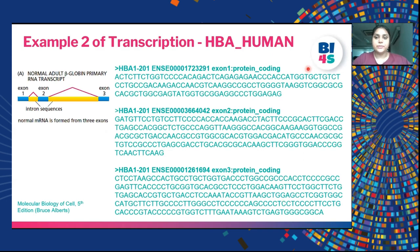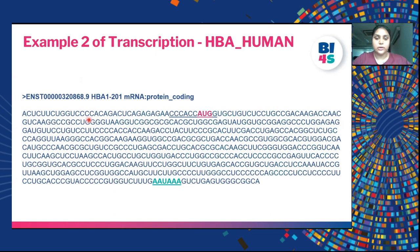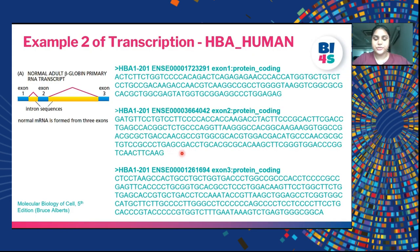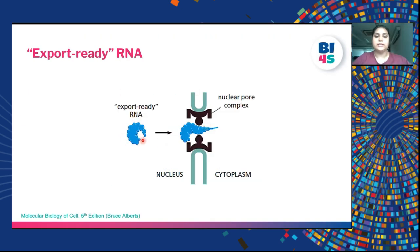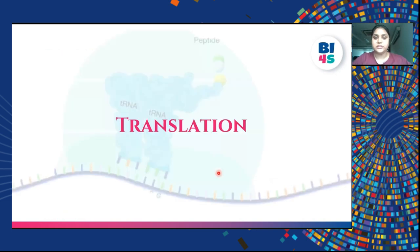Example 2 uses the human beta-globin gene. The normal adult beta-globin primary RNA transcript (pre-mRNA) has exon 1, intron 1, exon 2, intron 2 and exon 3. The normal mature mRNA is formed from these three exons and has a poly-A tail. After transcription, this export-ready RNA with the cap, tail and spliced introns leaves the nucleus through the nuclear pore complex and enters the cytoplasm where it is translated.